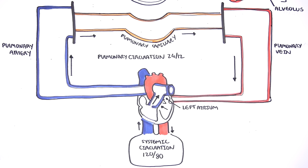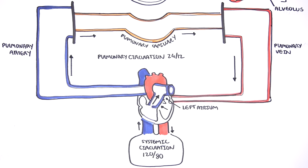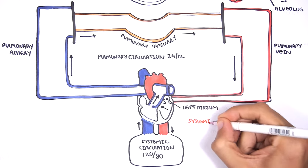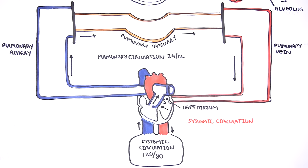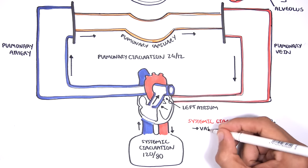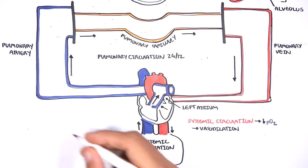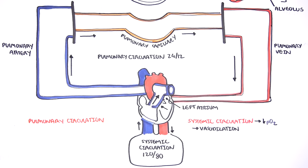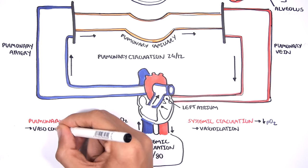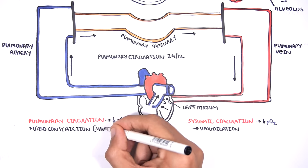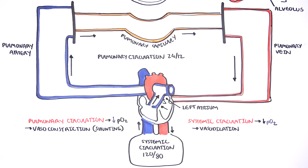Another difference between systemic and pulmonary circulation is the response to low oxygen levels. In systemic circulation, a decrease in oxygen supply will cause systemic vasodilation to increase blood flow and hopefully increase oxygen supply to the systemic organs. However, in the pulmonary circulation, a decrease in oxygen or decrease in ventilation means that the pulmonary circulation will constrict to compensate for the decrease in ventilation. There is normal blood flow but poor ventilation — a pulmonary shunt occurs.